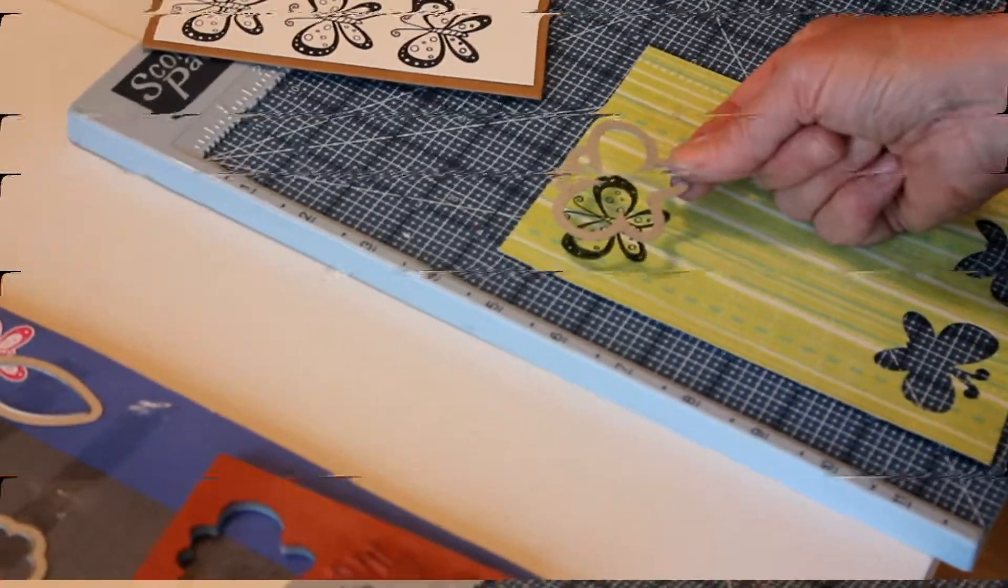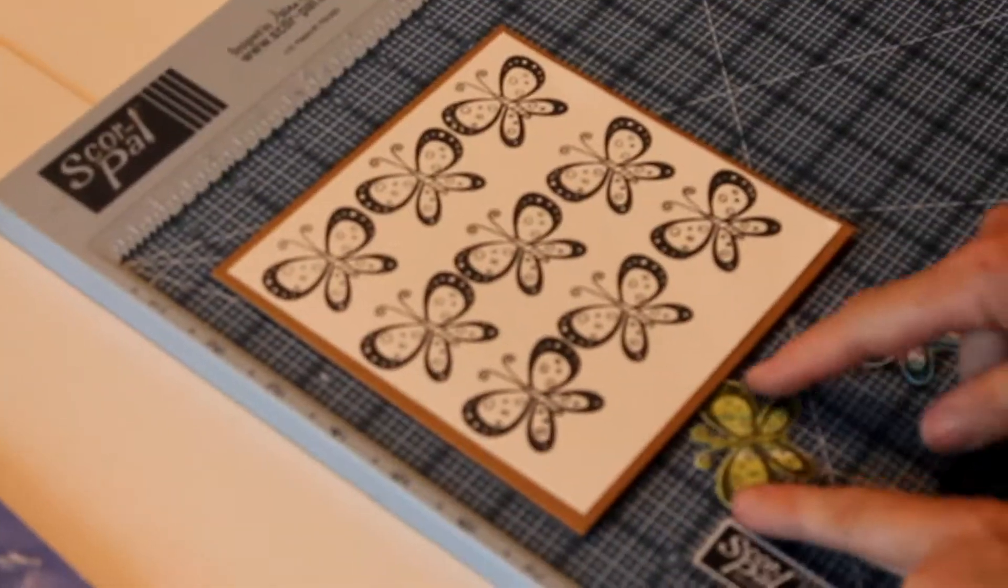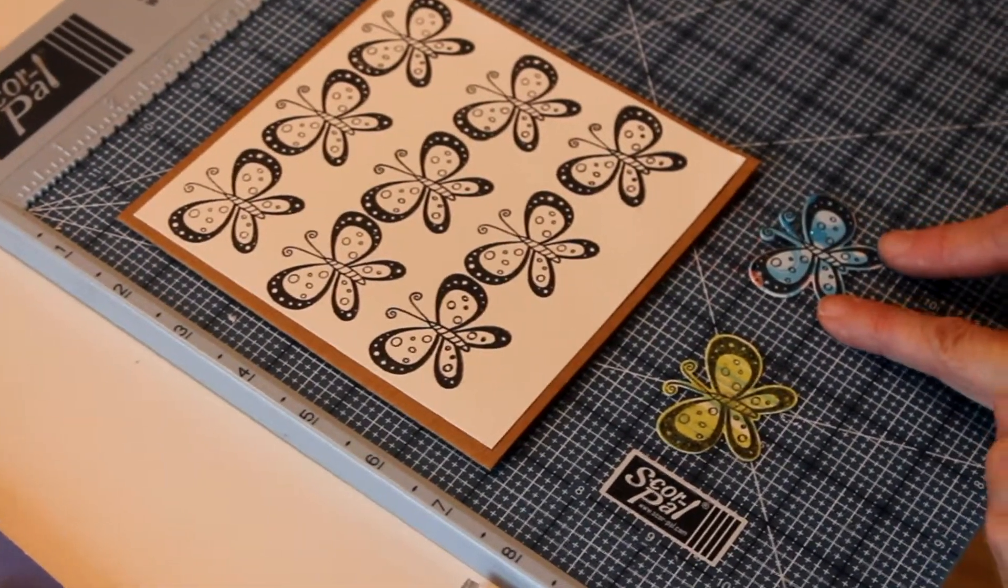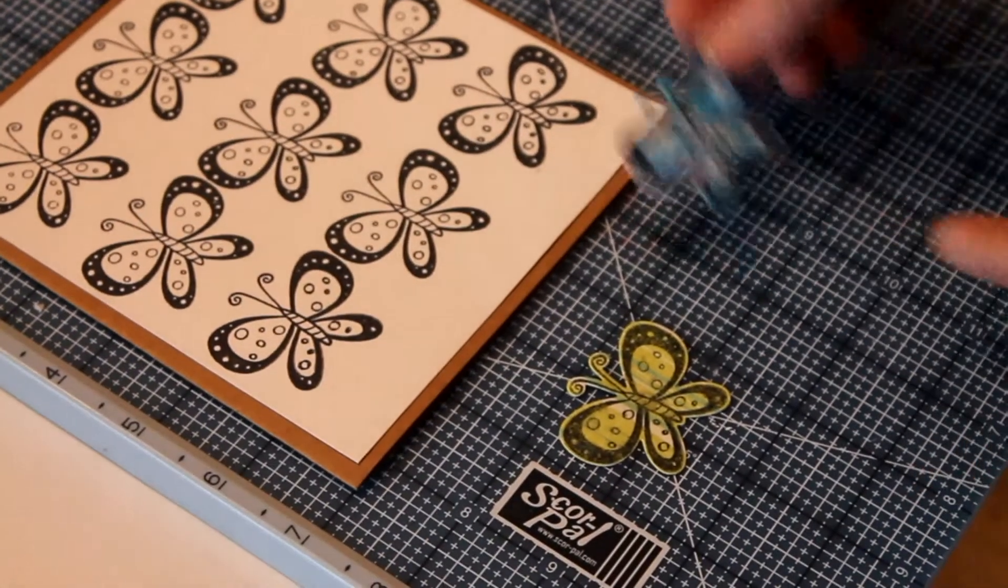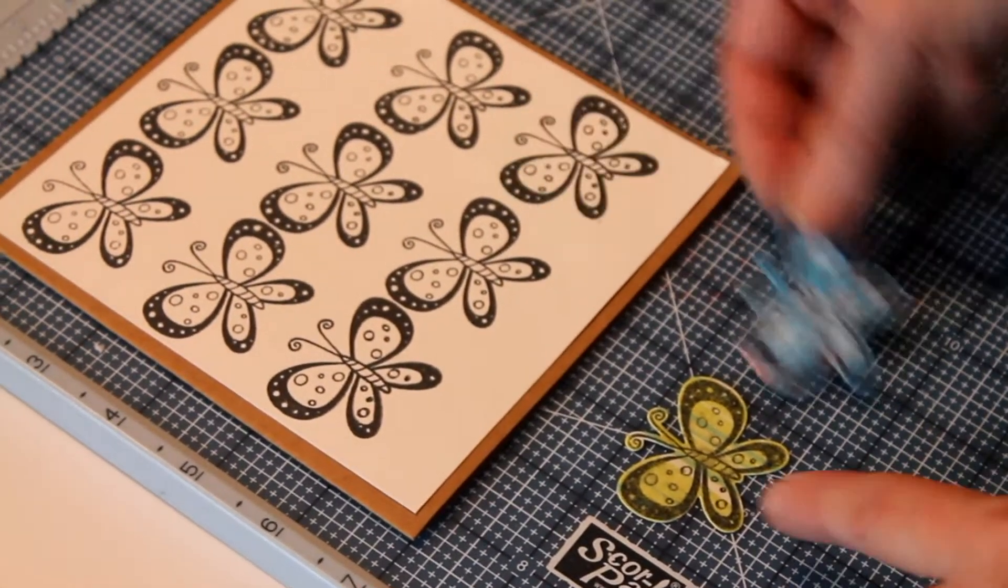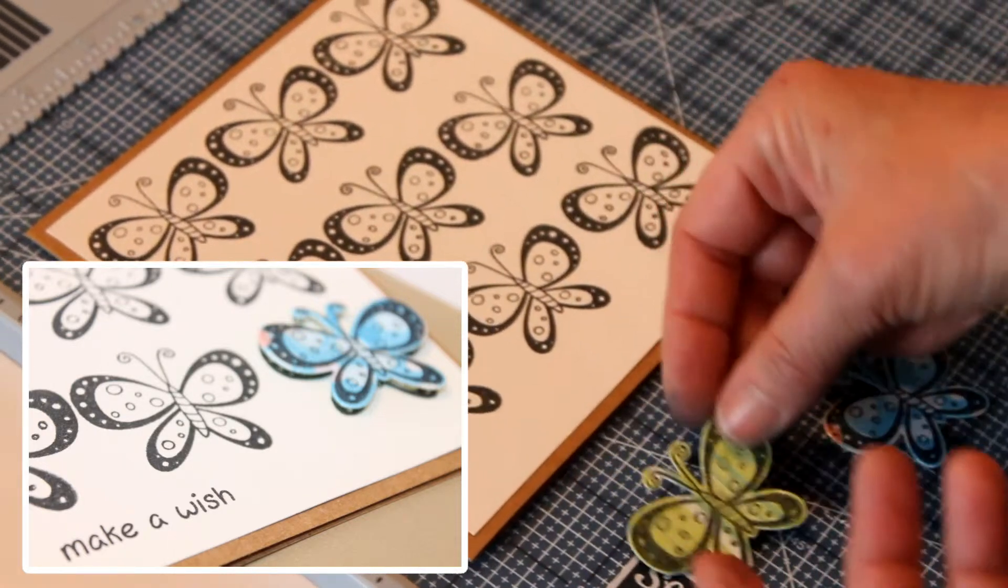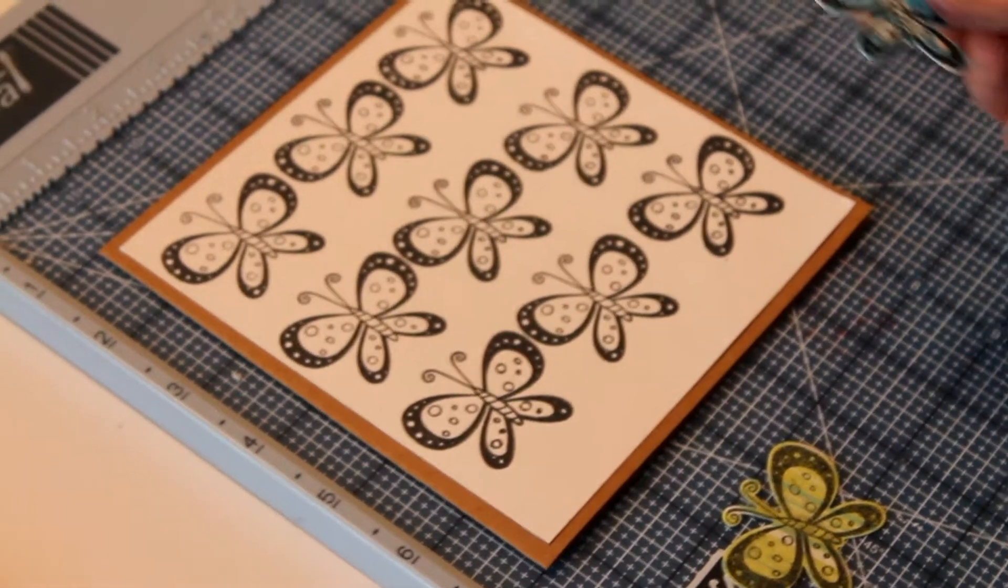I stamped, as you saw, on the green side of this paper but I also stamped it on the blue side just to show you that depending on what color you put on makes it either dramatic or less dramatic. I'm going to use the blue on this.